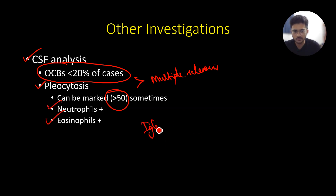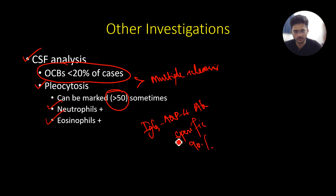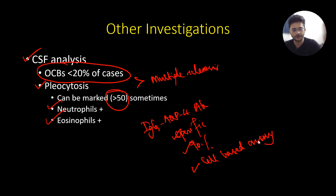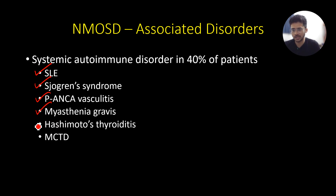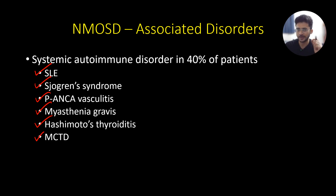Don't forget IgG aquaporin-4 antibodies — very specific, seen in 90% of patients with classical NMOSD syndrome, and it should be done by cell-based assay. NMOSD is associated with other systemic autoimmune disorders in 40% of cases, so it is vital to screen for these: SLE, Sjögren's syndrome, ANCA vasculitis, myasthenia gravis, Hashimoto's thyroiditis, and mixed connective tissue disorder.